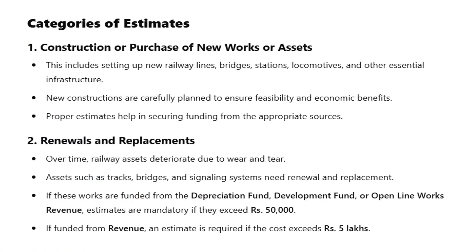Category 1: Construction or purchase of new works or assets. This includes setting up new railway lines, bridges, stations, locomotives, and other essential infrastructure. New constructions are carefully planned to ensure feasibility and economic benefits. Proper estimates help in securing funding from the appropriate sources.